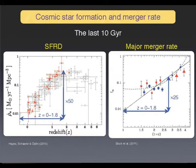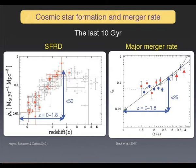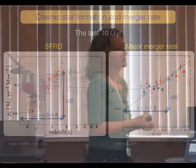I'll show you a few facts about the evolution of the universe in general for normal galaxies. What we know is that the star formation rate density of the universe is evolving, and also the major merger rate. The change is dramatic: from redshift 1.8 to 0, it's a factor of 50 in star formation rate density. In the past there was 50 times more star formation than in the local universe, and the major merger rate between big galaxies has also changed by a large factor.